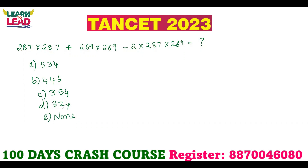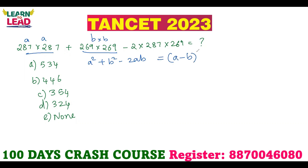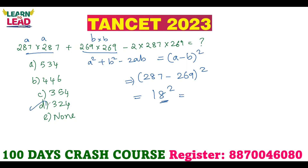How will you solve this? A into A is A squared, B into B is B squared — so this is A squared plus B squared minus 2AB. We know A squared plus B squared minus 2AB equals A minus B, the whole square. So A is 287, B is 269. 287 minus 269 is 18. 18 squared is 324. So 324 is your answer — option D.